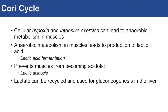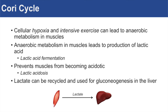The Cori cycle is important because lactic acid produced in the muscles can lead to decreased tissue pH levels. The Cori cycle processes and removes lactic acid to prevent muscles from becoming acidotic. Additionally, the liver can take the lactate — a byproduct of anaerobic metabolism — and convert it through gluconeogenesis to form glucose, which the skeletal muscle will use for energy production.